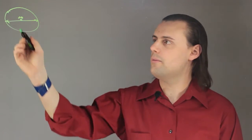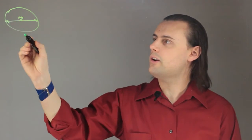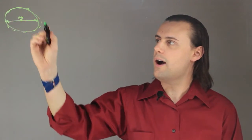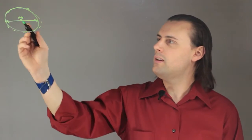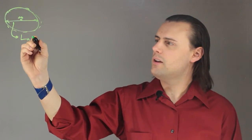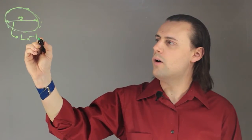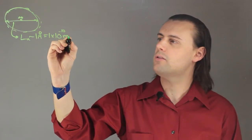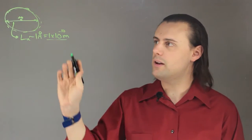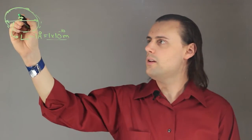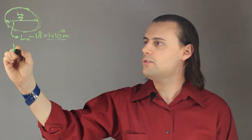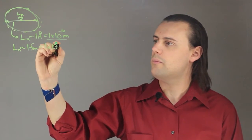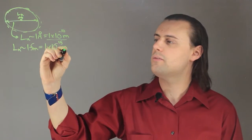So if we look at the length scale — if this is an entire atom, this is the nucleus, and this is more or less the approximate outer edge of the orbiting electrons — the length of the atom is on the order of 1 angstrom, which is equal to 1 times 10 to the minus 10 meters. That's really tiny, but not as tiny as the size of the nucleus. The length scale of the nucleus is on the order of 1 femtometer, which is equal to 1 times 10 to the minus 15 meters.